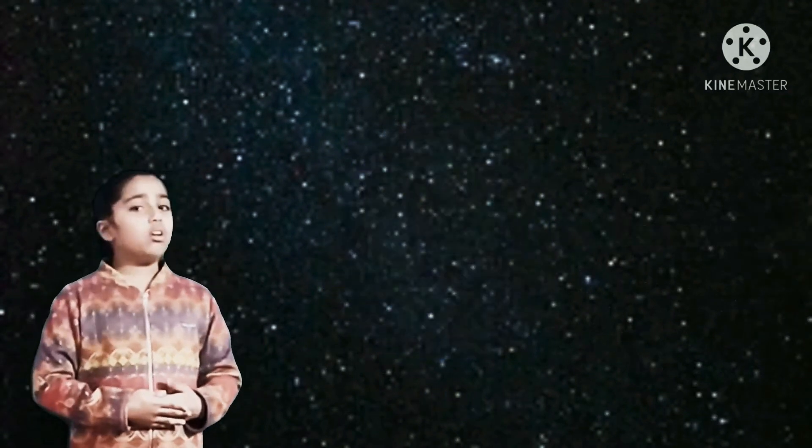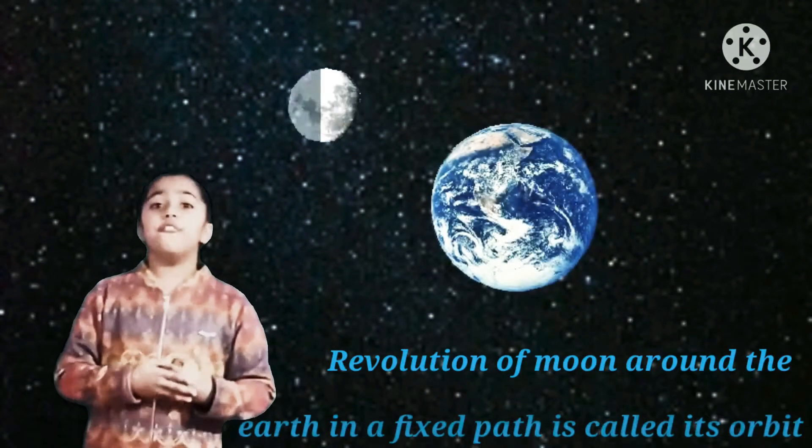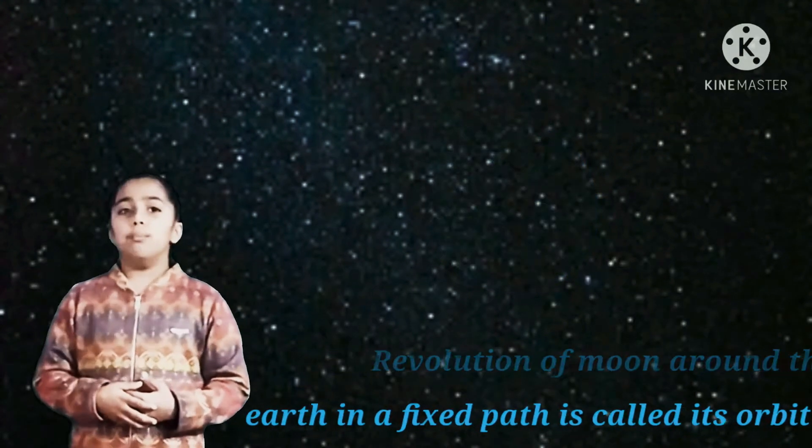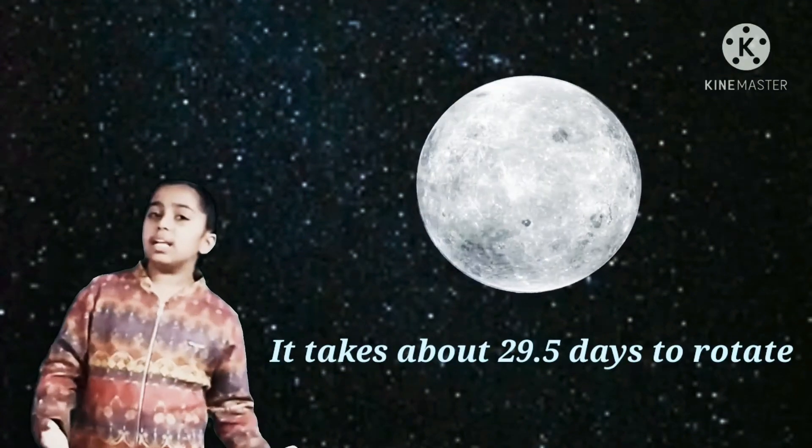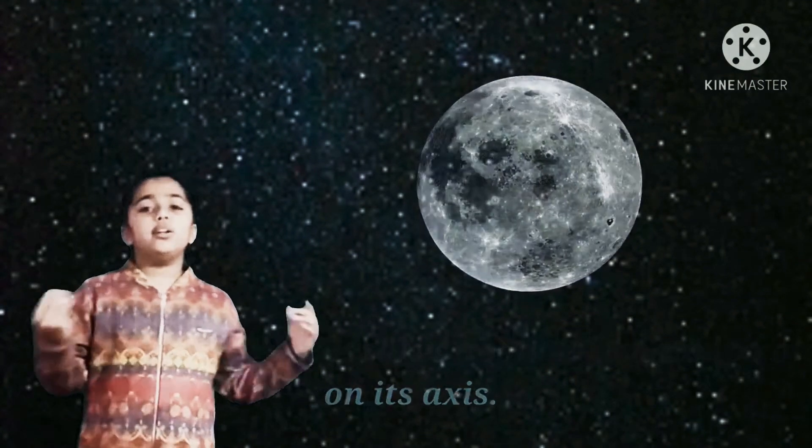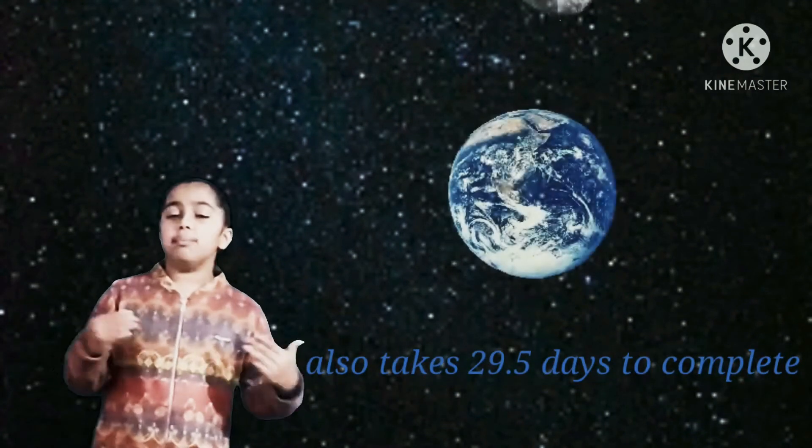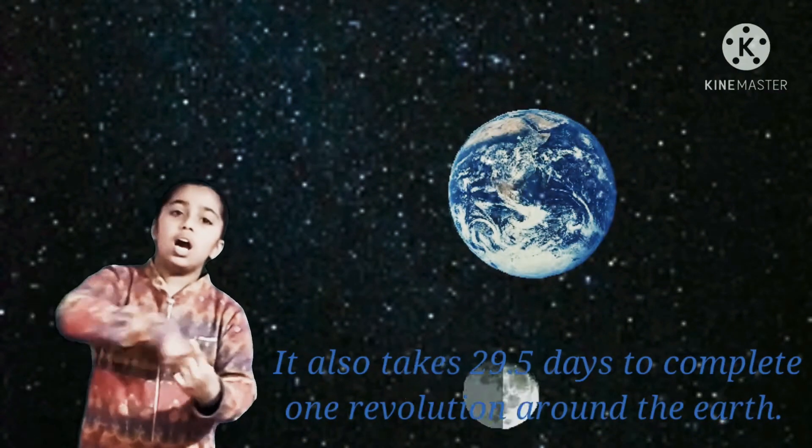The moon revolves around the earth on a fixed path known as orbit. The moon takes about 29 and a half days to rotate on its axis. It also takes about the same time to complete one revolution around.